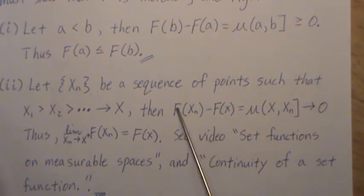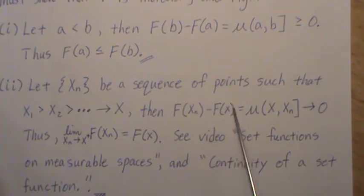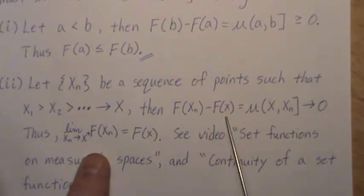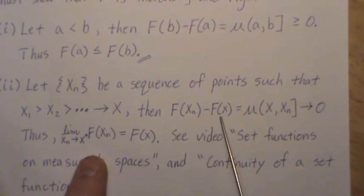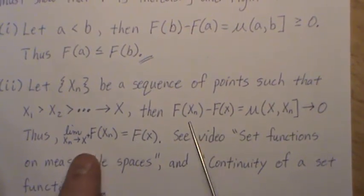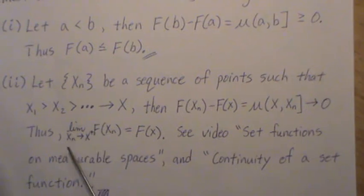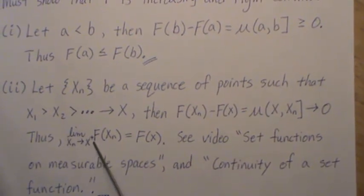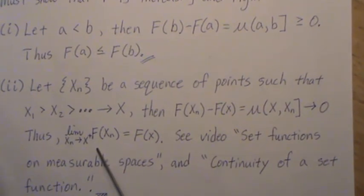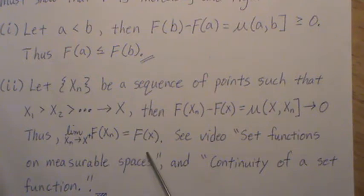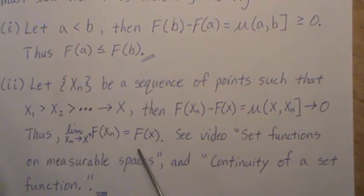Thus, if we take the limit as n goes to infinity here, and since there's no x here, you could take it to the other side, and so the limit of x_n approaching x from the positive side is F(x). F(x_n), I should say.